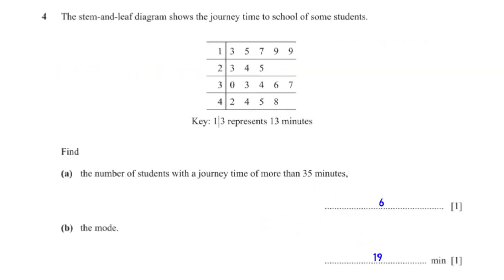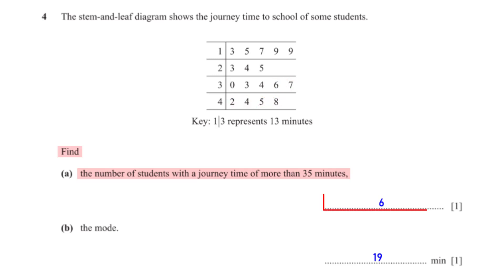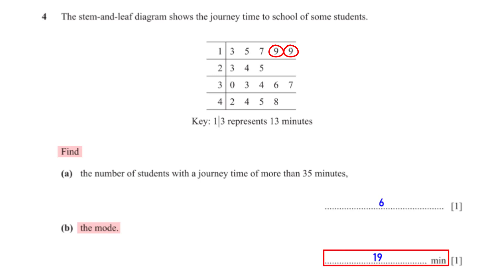The stem and leaf diagram shows the journey time to school of some students. Find the number of students with a journey time of more than 35 minutes. From the stem and leaf diagram, we see that there are six students who have a journey time greater than 35 minutes. Find the mode — the mode is the number that appears the most, and that is 19.